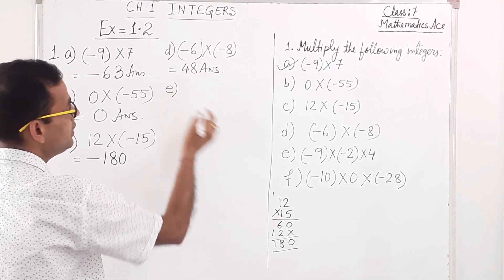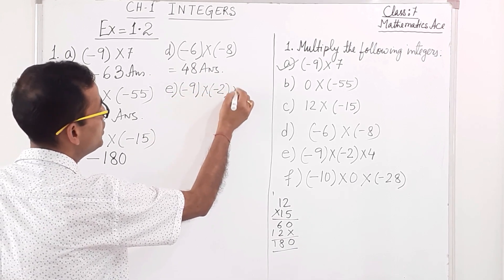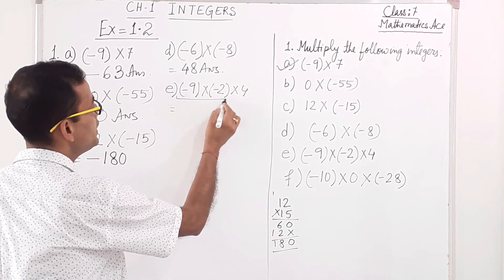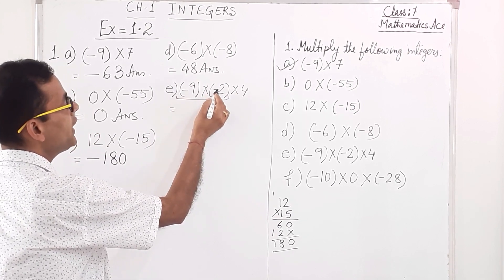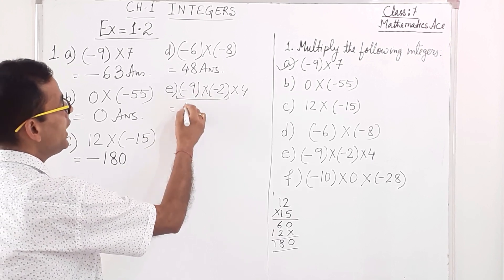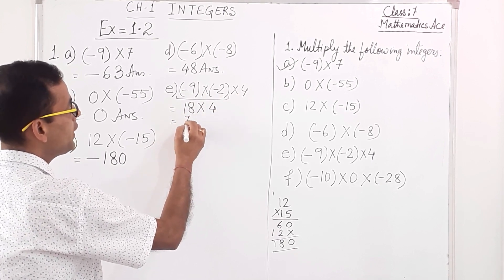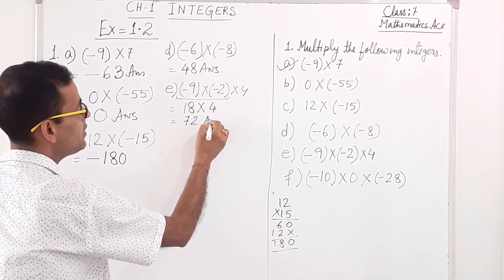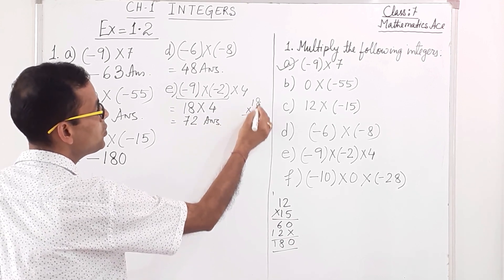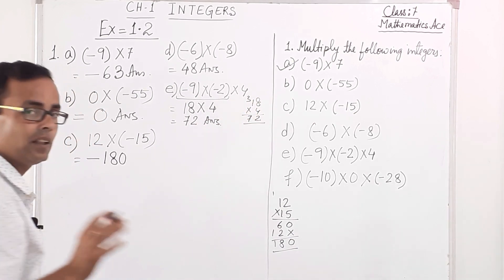Number e: minus 9 into minus 2 into 4. There are 3 integers, so first we do the first two. Negative into negative — same sign — gives positive 18. Then 18 into 4 gives 72. So the answer is 72.